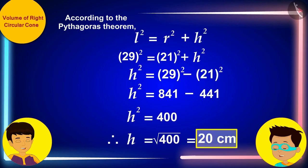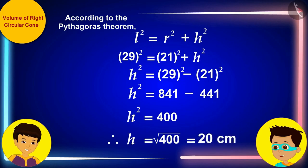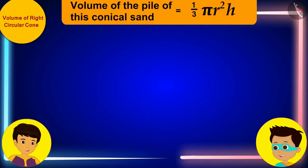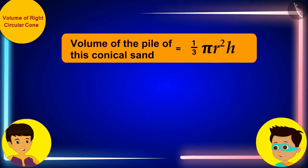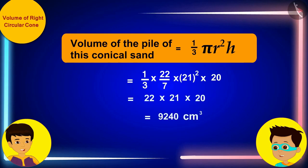Got it! The answer is 20 cm. Oh, wow! Now, let me quickly replace R and H in this formula respectively. The radius of the conical pile of sand is 21 cm. And we solved to get the height, which is 20 cm.